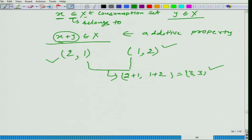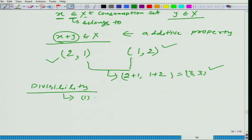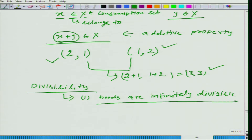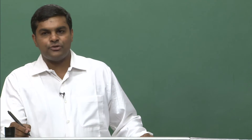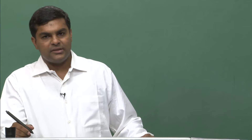You are not allowed to define your consumption set randomly. It should follow some restrictions — it should be constrained by certain criteria. The third property I want to talk about is divisibility. We just talked about the additive property; now the third is divisibility. One assumption we make is that goods are infinitely divisible. These are mathematical properties, but in economics we use mathematics intensively as a language to make our lives simpler.